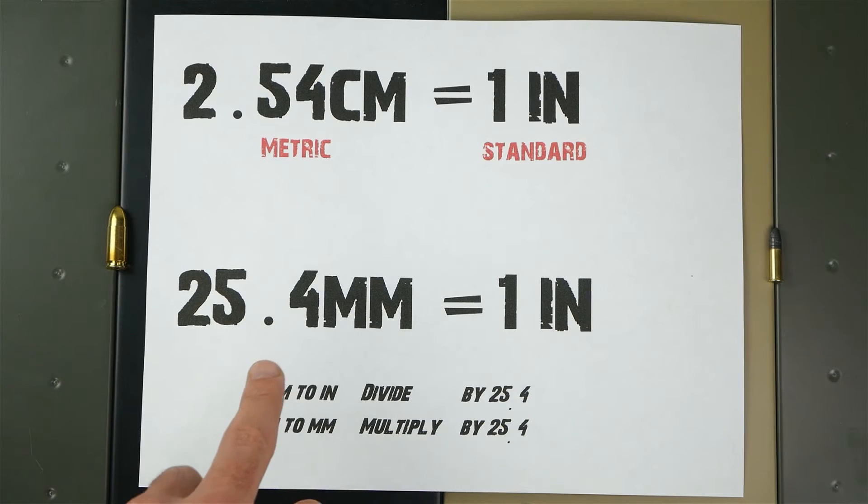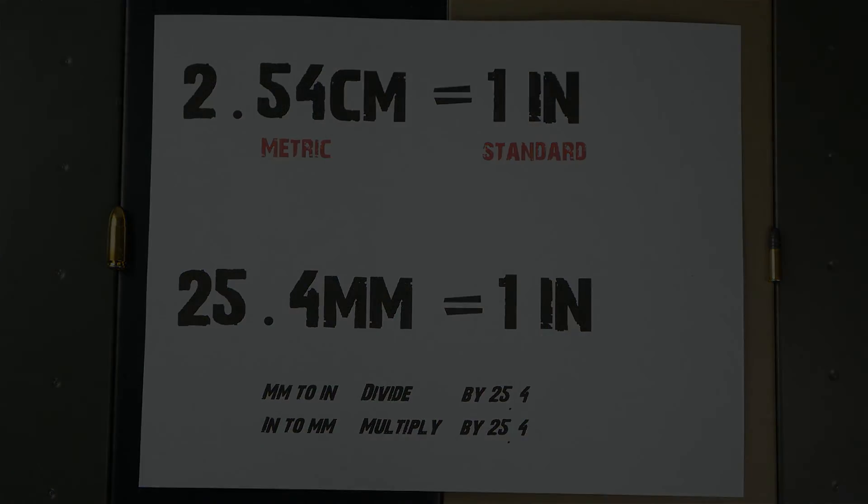So it's that simple. If you're going from millimeters to inches, divide by 25.4. If you're going from inches to millimeters, multiply by 25.4. Your magic number is 25.4. Big Company from G&A today. Thanks for watching.